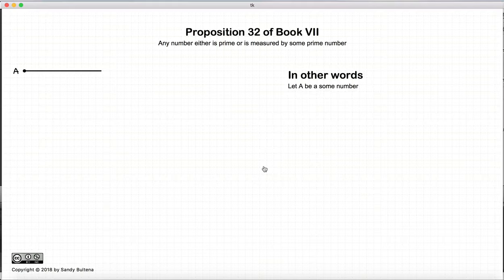Now in this proposition, we say that a is any number, and a is either a prime, or it's measured by a prime number.